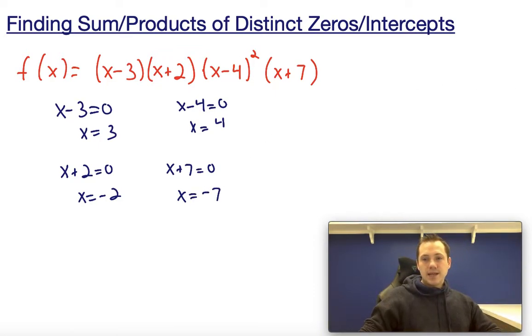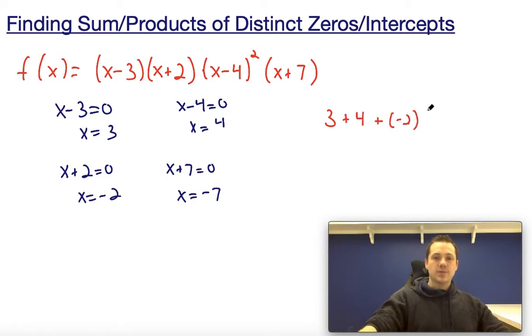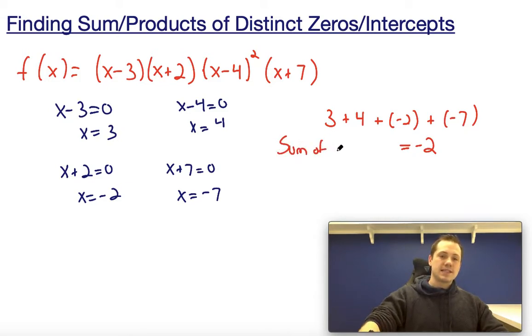Now what we can do is we can go ahead and just add all of these values. So if I add 3, 4, negative 2, and negative 7, these numbers all add to negative 2. So we can say that the sum of the distinct zeros equals negative 2.